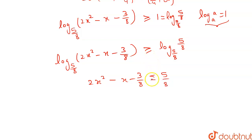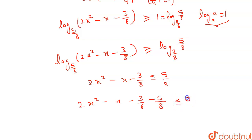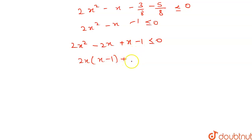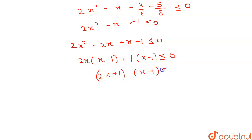We changed the inequality sign because the function is decreasing. So 2x² - x - 3/8 - 5/8 ≤ 0, which gives 2x² - x - 1 ≤ 0. Factoring: 2x² - 2x + x - 1 ≤ 0, taking 2x from the first two terms and 1 from the last two gives (2x + 1)(x - 1) ≤ 0.